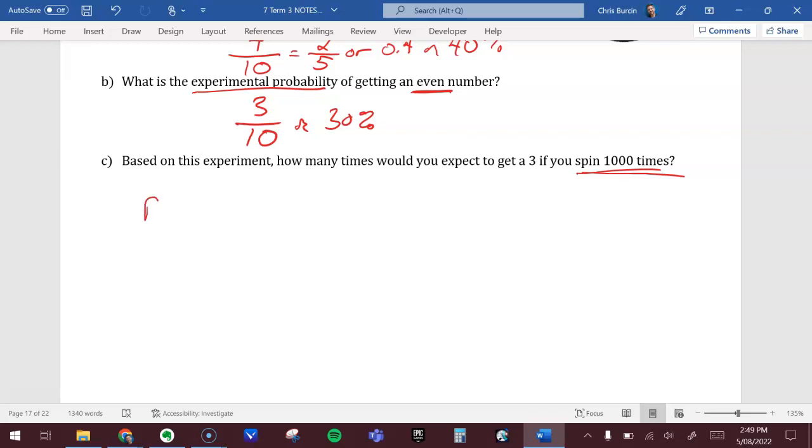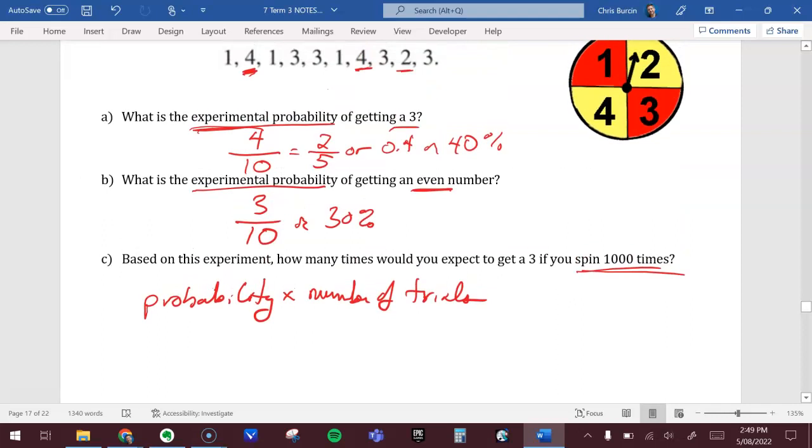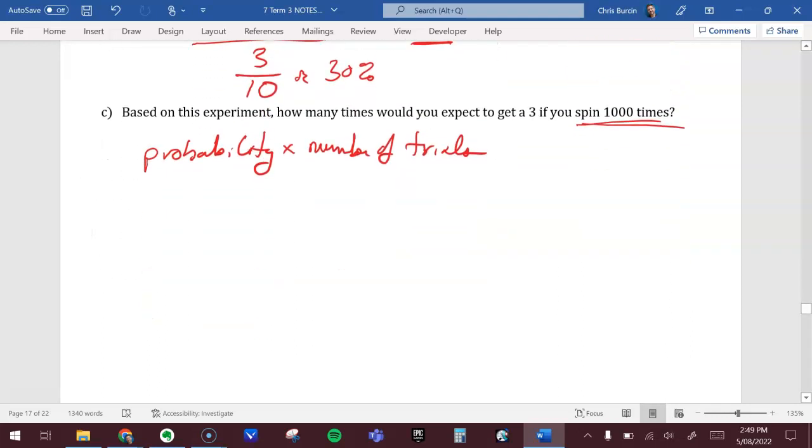What do we know? We're going to get the probability times the number of trials. We know that we want to try it a thousand times. So we're going to take the probability of getting a three - the experimental probability, two out of five or four out of ten, which is two out of five - and multiply that by a thousand.